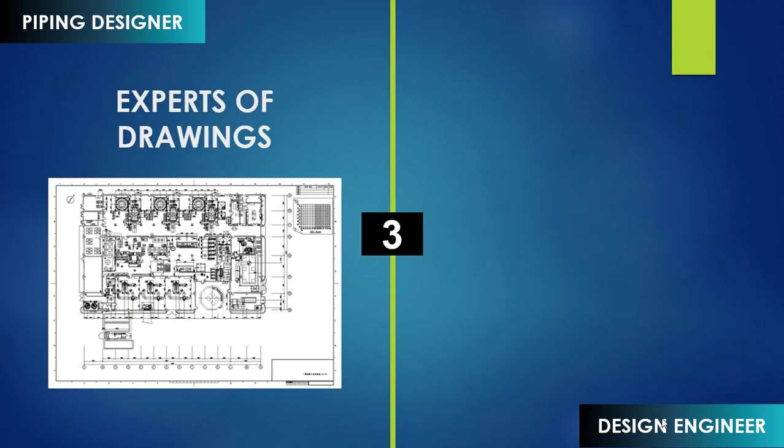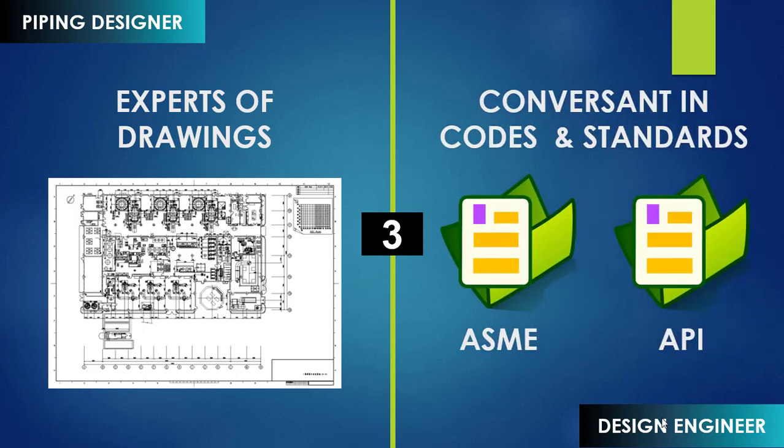Designers are considered to be experts of drawings because drawing preparation and making is not an easy task. It involves various activities such as sizing the drawing, sectioning the plot into various drawings, sizing and positioning the text, and making the layout appealing and readable. Designers are highly knowledgeable in doing all these activities comfortably. Design engineers, on the other hand, are more conversant with codes and standards such as ASME and API, and the minimum requirements identified in those codes and standards.